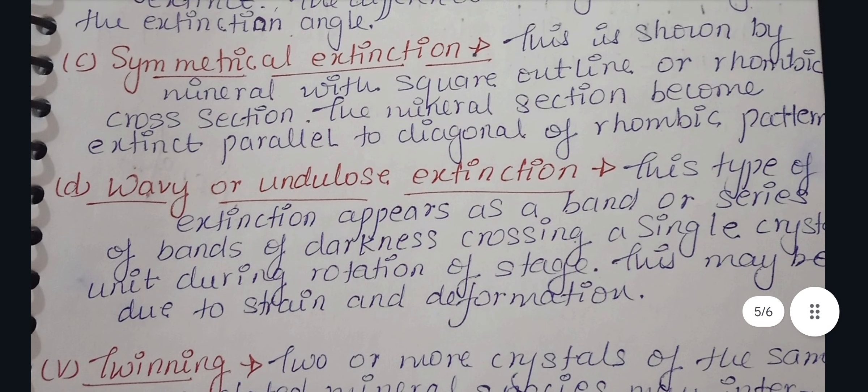Moving on to the third type: symmetric extension. This is shown by minerals with a square outline and rhombic cross section. These minerals show a square outline across all boundaries and a rhombic cross section. The mineral section becomes parallel to the diagonal of the rhombic pattern.